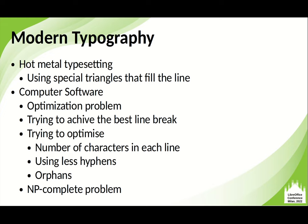In modern typography, things are somehow different. Before computers, we had hot metal typesetting — for example, linotype. Even without computers, mechanical tools were used to achieve justified text. For example, special triangles were used to fill the line; pressure was applied on top, and spacers filled the space to make the paragraph justified.